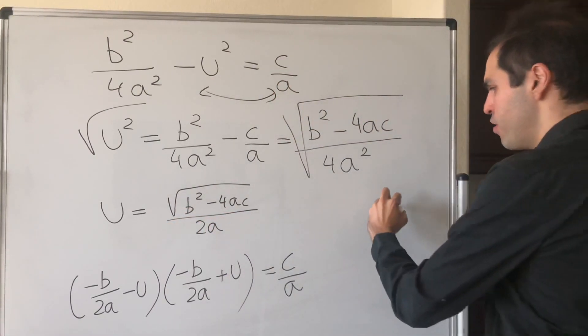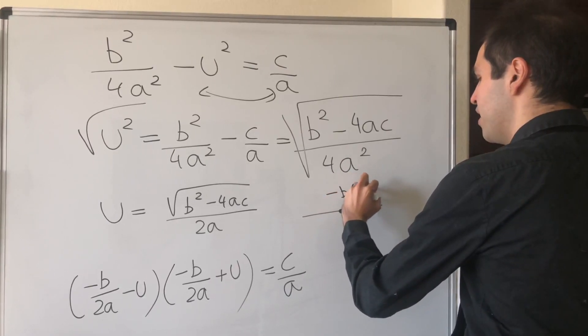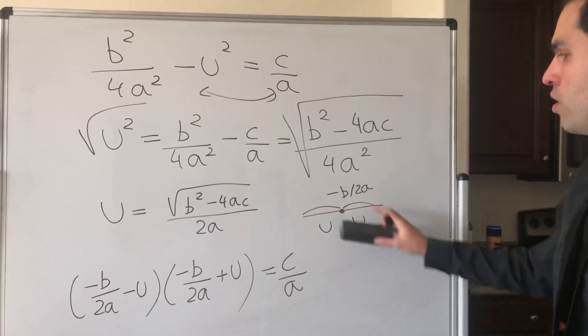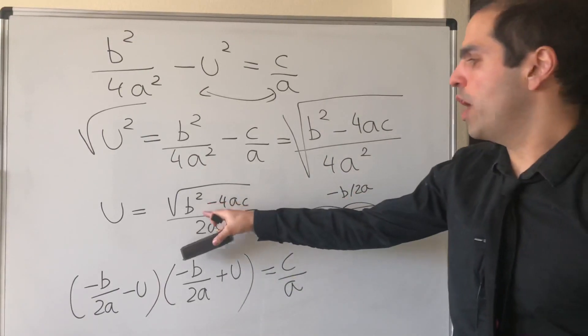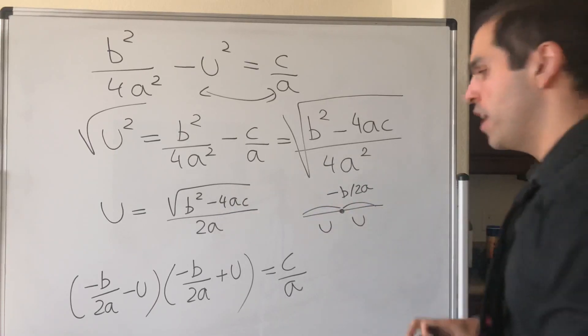Remember, our midpoint was -b/2a and the distance is u. So one root is -b/2a minus that, and the other root is -b/2a plus that.